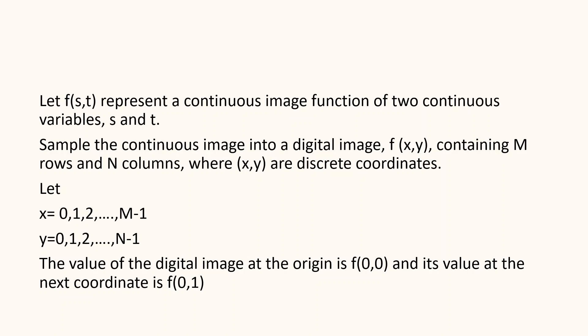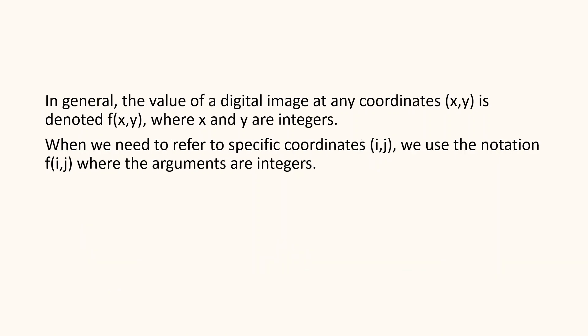The value of the digital image at the origin will be f(0,0) and the value at the next coordinate is f(0,1). In general, the value of a digital image at any coordinate can be denoted as f(x,y) where x and y are integers. When we need to refer to a specific coordinate, we can use the notation f(i,j) where the arguments are integers.